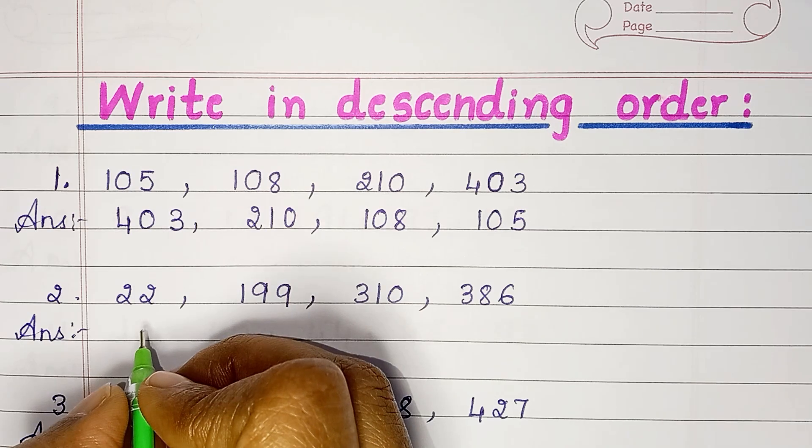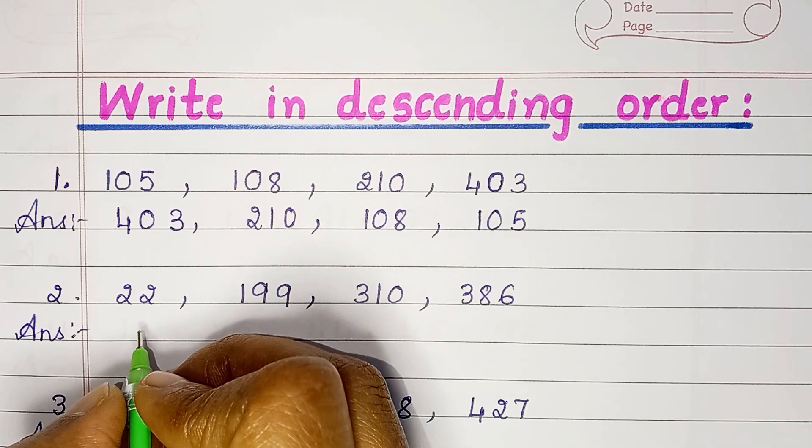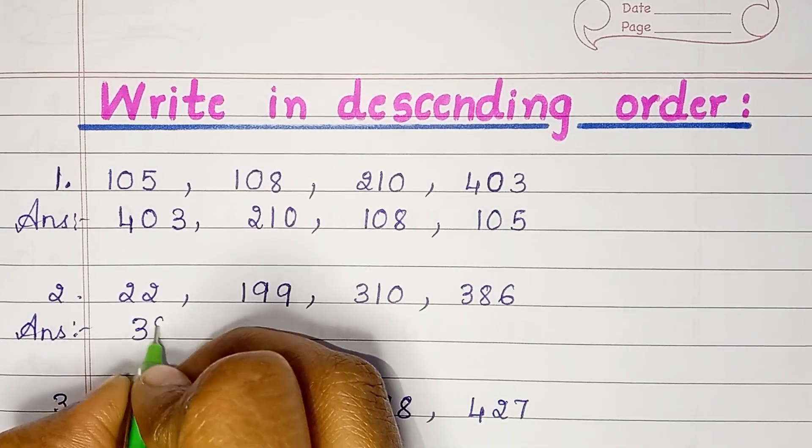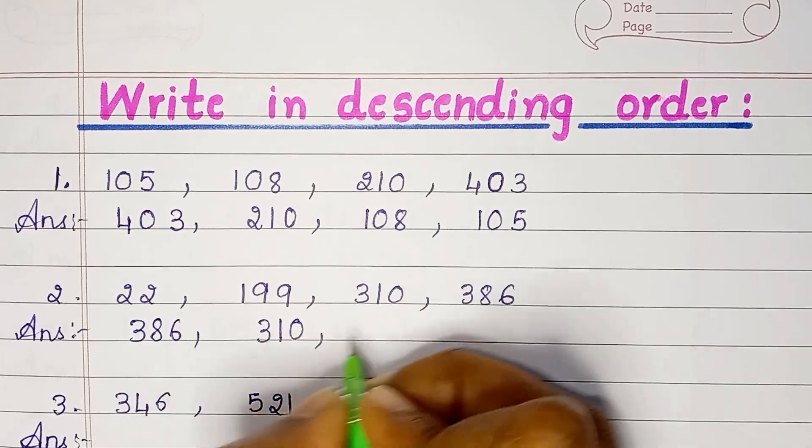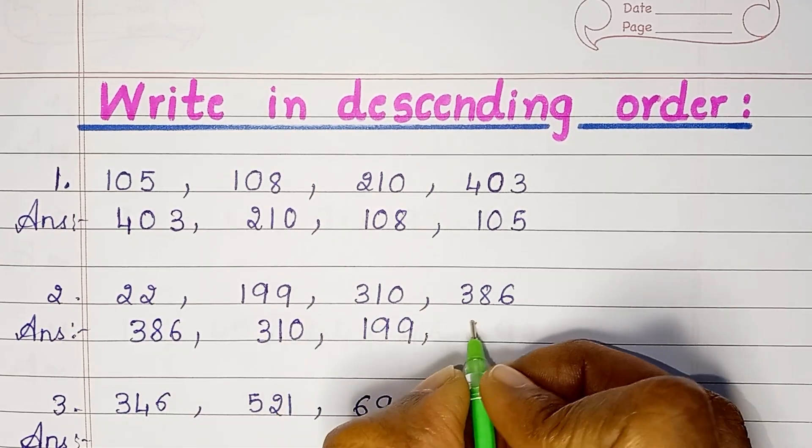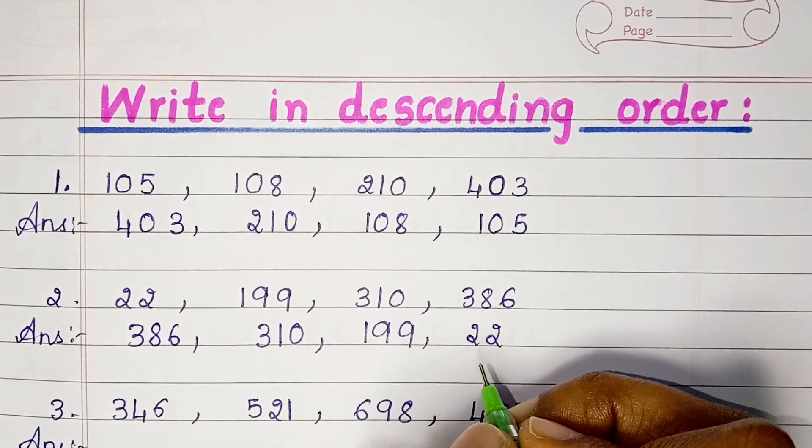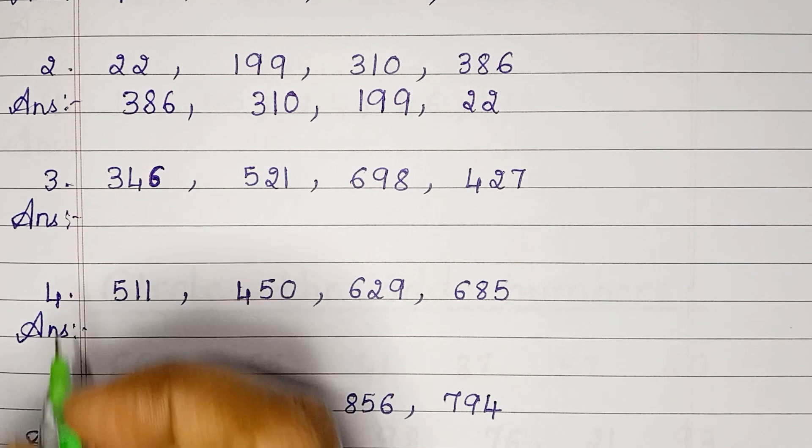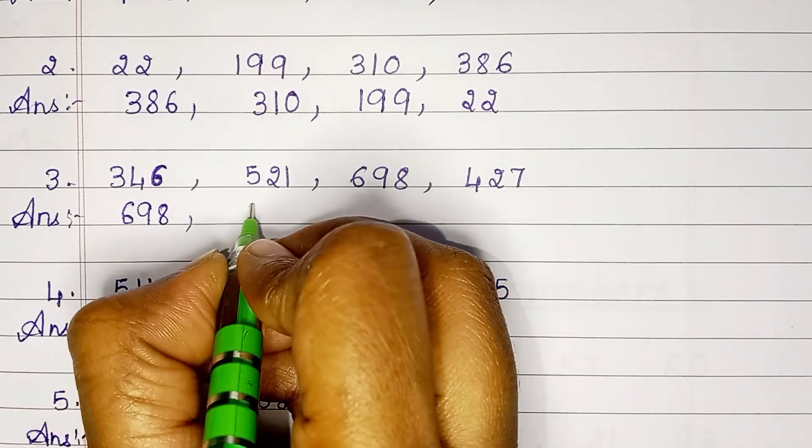22, 199, 310, 386. The largest number is 386, then 310, 199, 22.